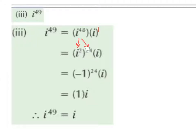Then 48 can be broken down as i squared raised to the power of 24, because when we raise a power to a higher power we multiply the powers, and 2 times 24 is 48. The reason we've done that is because we want to get an i squared, since we know i squared is minus 1. The i to the power of 1 just stays as i.